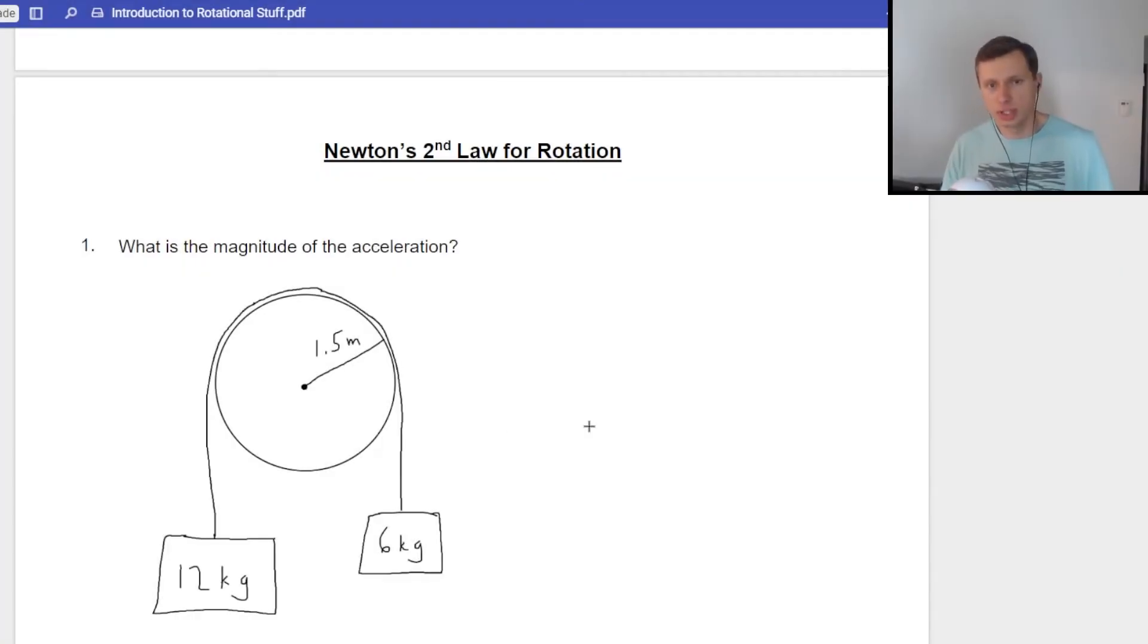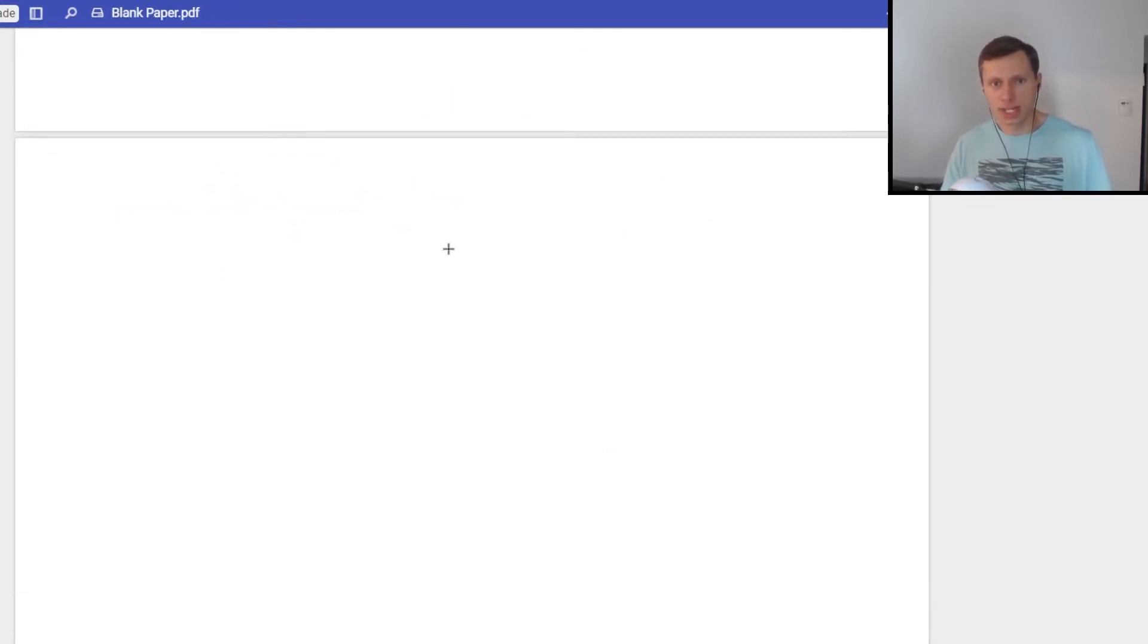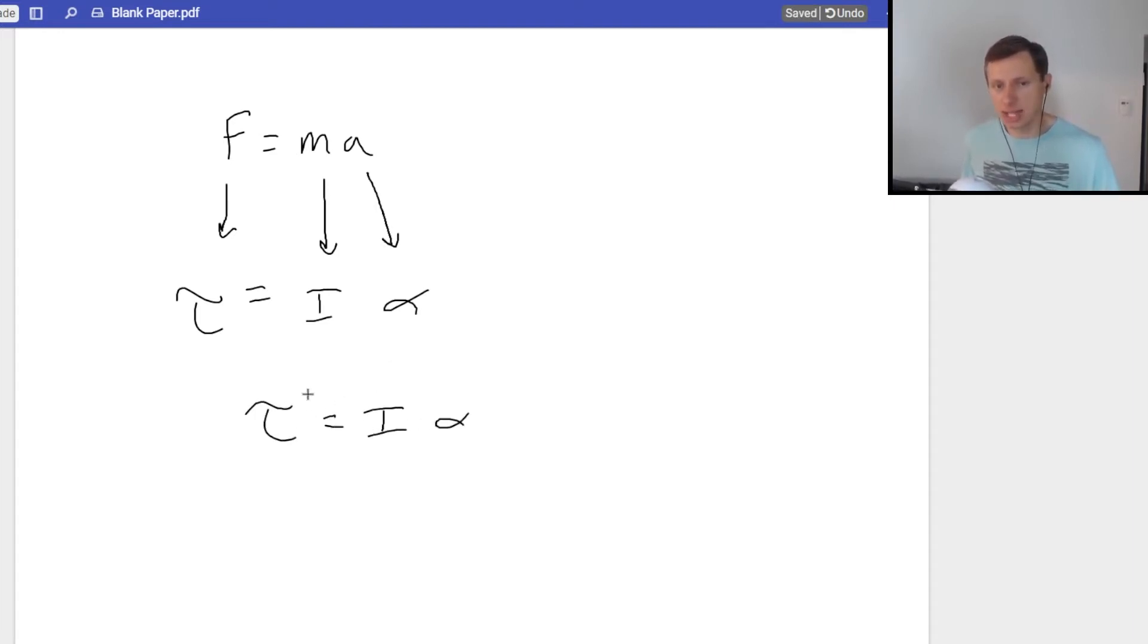So this is the last question of the night, Newton's second law of rotation. First let's talk about Newton's second law. Newton's second law said F equals Ma, right? Well, we're going to have a torque equivalent of this equation. The equivalent for force is torque, the equivalent for mass is I moment of inertia, and the equivalent for acceleration is alpha. So we have this new equation: torque equals I times alpha. This is going to be very important, and it's exactly the same thing as when we had F equals Ma.